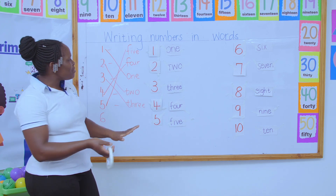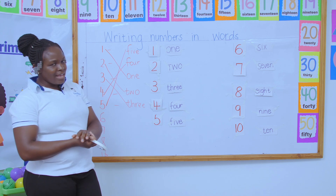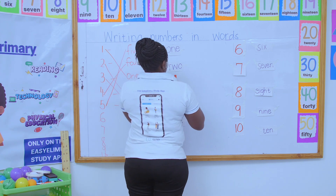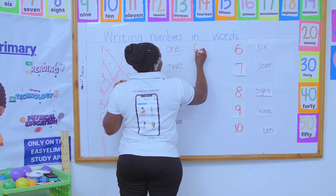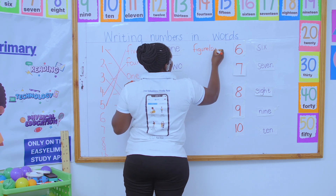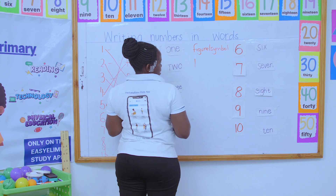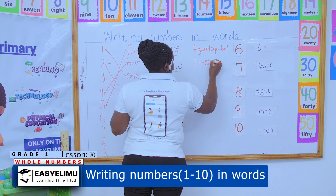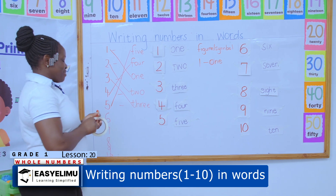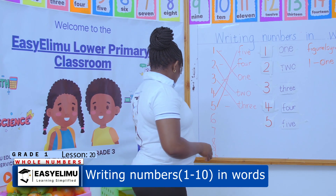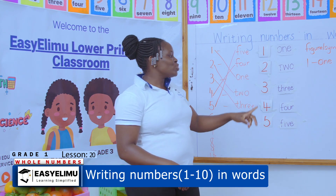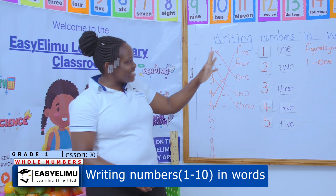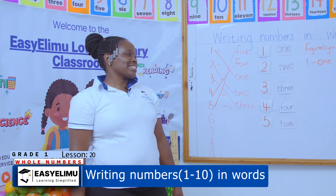Did you enjoy the lesson? Does anybody have a problem when it comes to writing numbers in words and figures? 'Figures' means numbers — figures means the symbol. The symbol for number one is like a stick. When I'm told to write in words, that is when I write the word 'one.' I hope nobody will find it hard to write these numbers again.